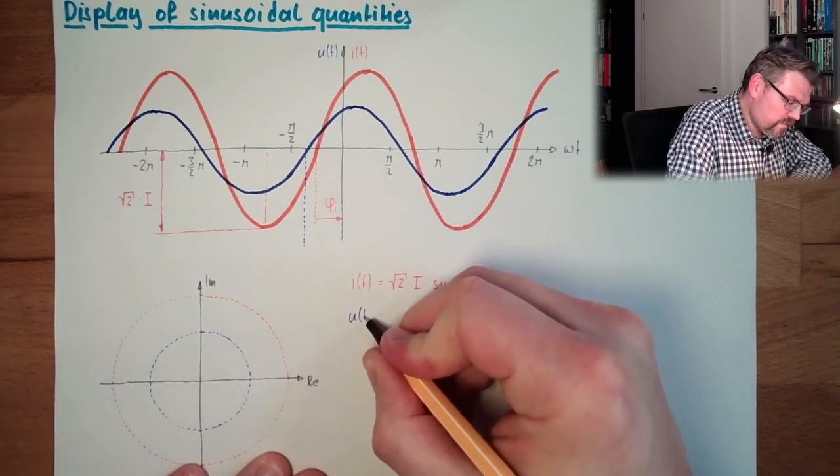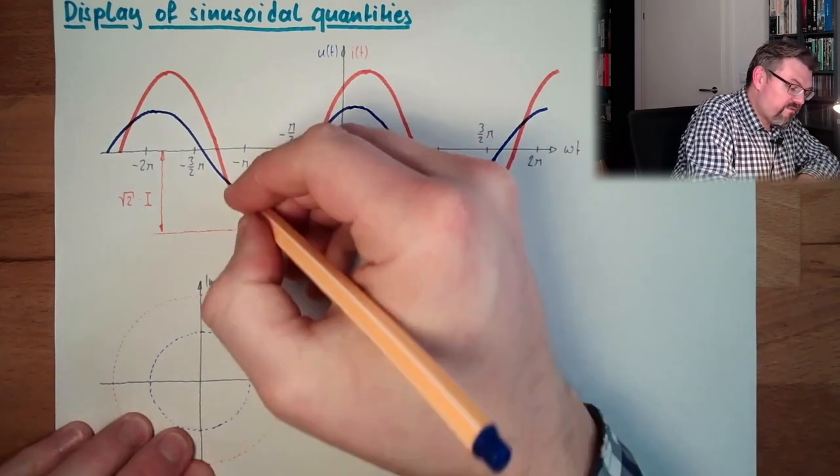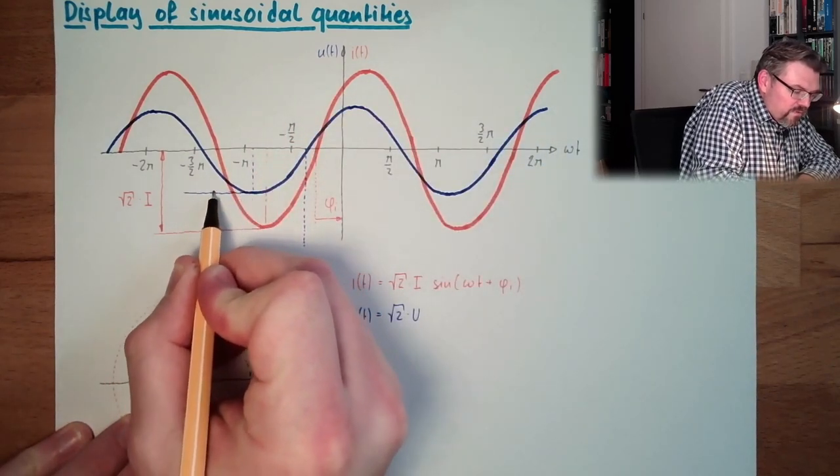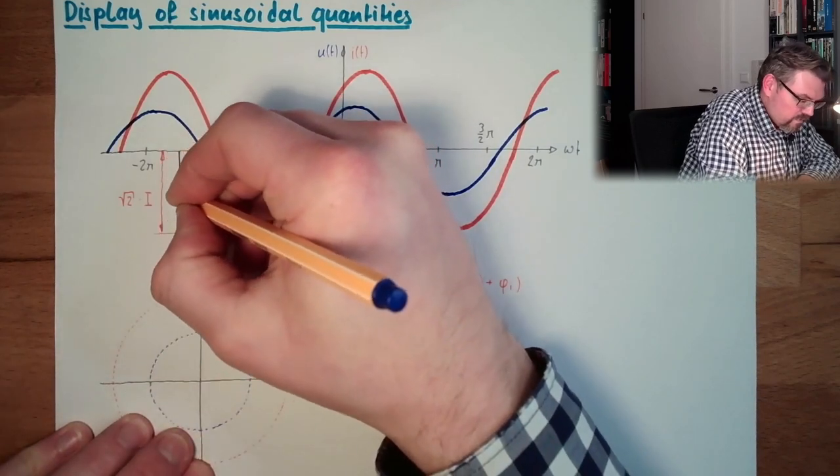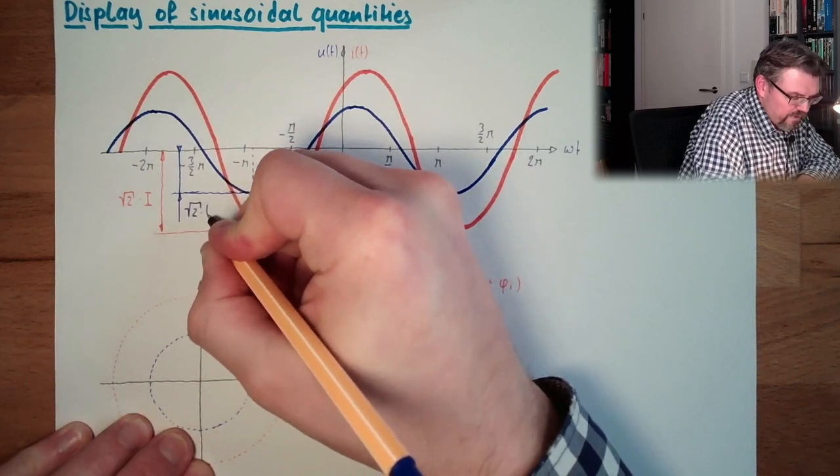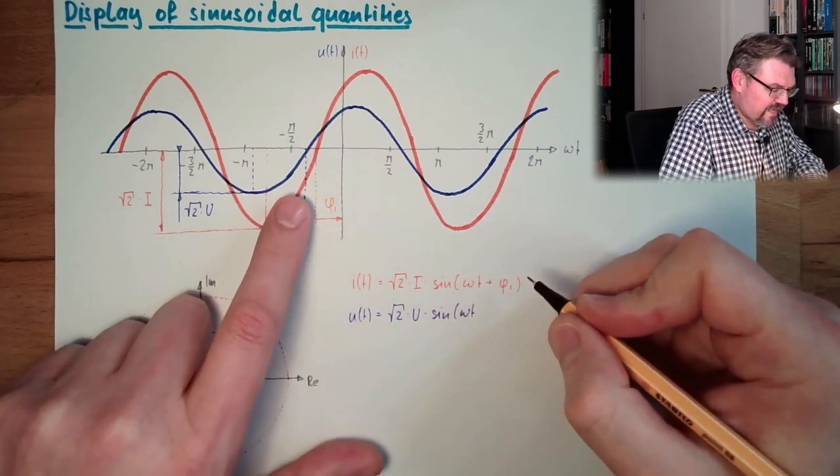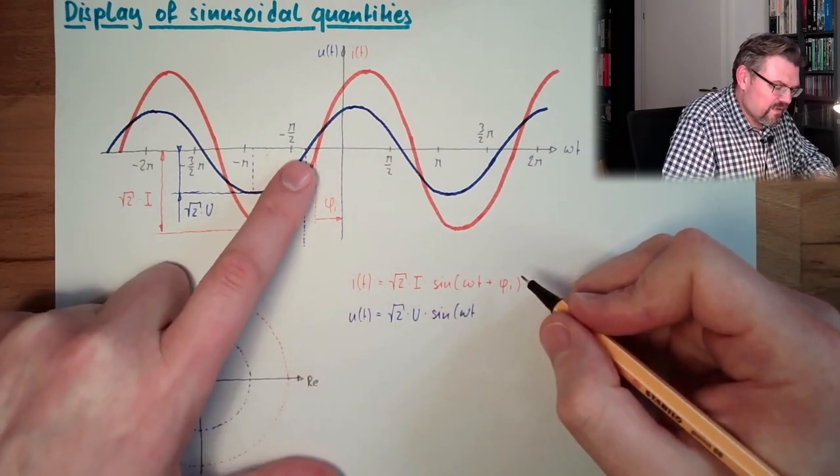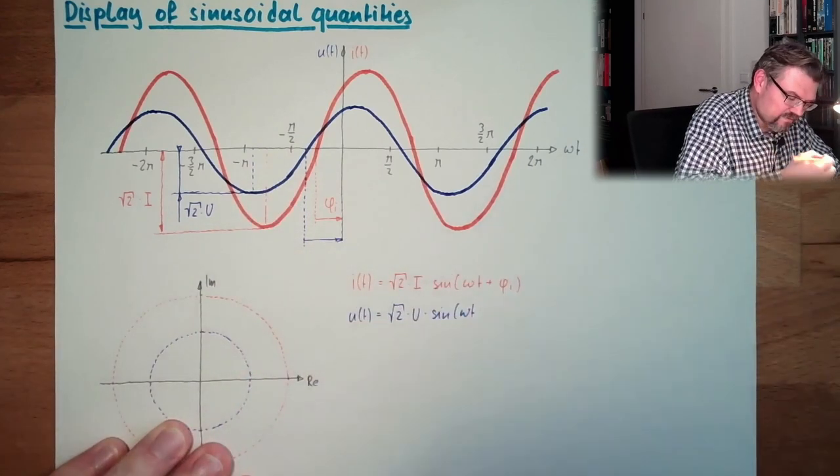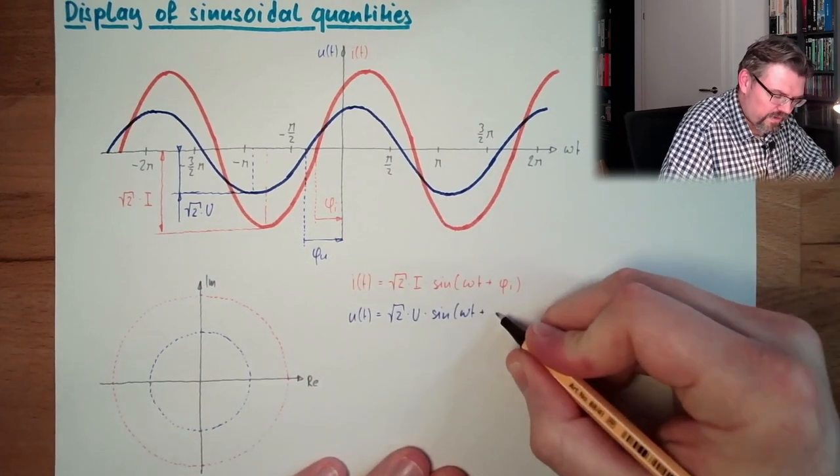U from T. This time it's square root of 2 multiplied by the effective value, by the root mean square. Here we have the amplitude here. Square root of 2 multiplied by the effective value. And then we have, of course, again a sinus, omega t. And this time it's a little bit earlier, this rotation. Here I have another phase angle, plus phi u.